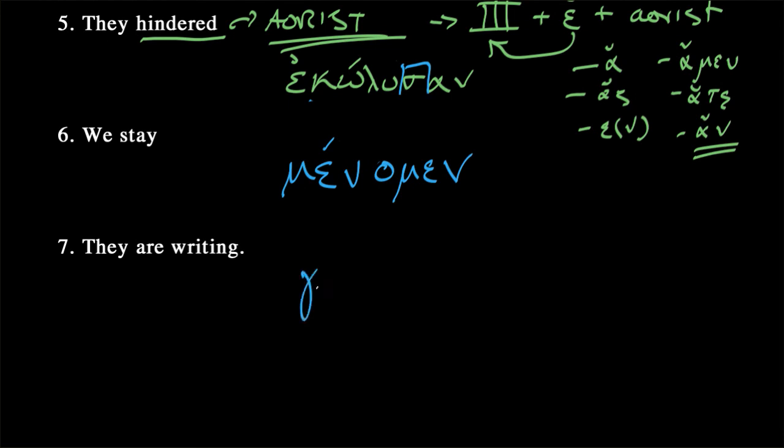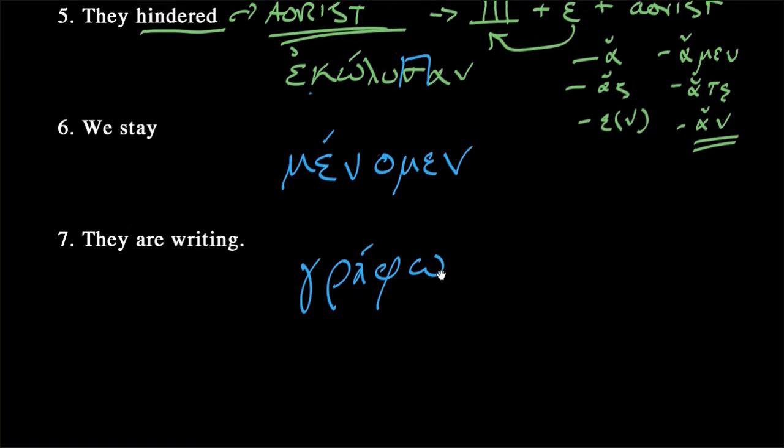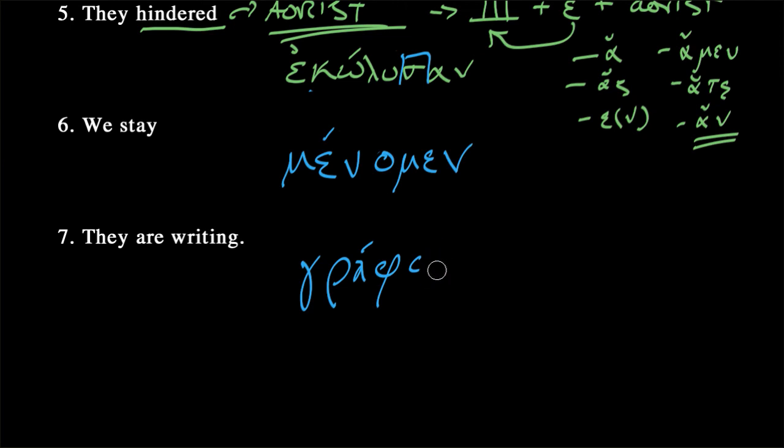So, we just need to add, because this was our present stem, our first principal part, our ending. Accent, as always, for the present indicative active, falls on the stem. Menomen. We stay, we are staying. We can do the same thing for they are writing. We remember that graphō is our first principal part for this word meaning to write. I am writing. So, we've got to make this they are writing. So, what was the third person plural ending? Ousi. Potentially with that nu movable. Graphousi. They are writing.